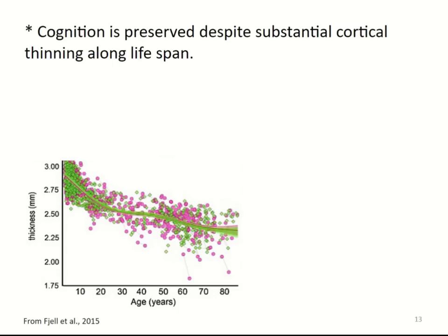We can associate changes in the cortex — like loss of neurons or synapses — with symptoms. However, in work from Gell in 2015, looking at cortical thickness in millimeters across individuals of different ages, we can see that across life we are losing thickness of the cortex, yet all these individuals are cognitively normal. So we can lose almost a third of the cortex without significant impact on our daily lives — cognition is preserved despite substantial cortical thinning along the lifespan.